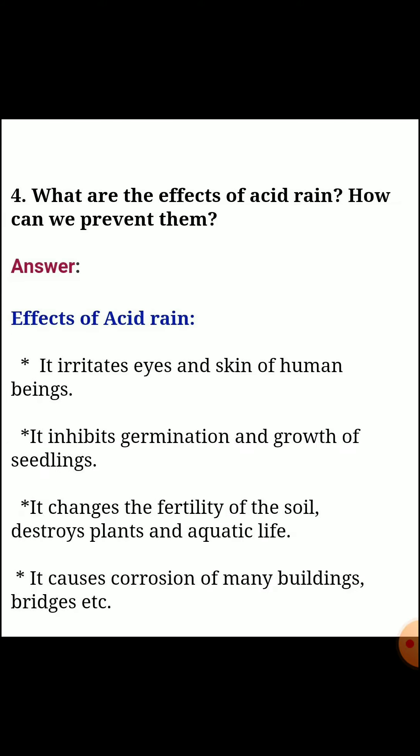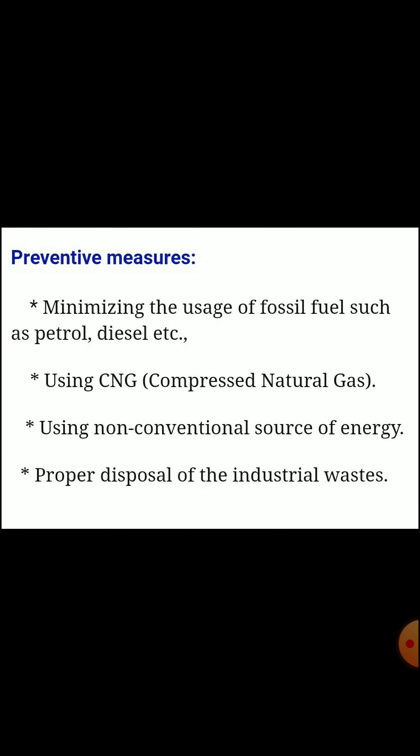Fourth question, what are the effects of acid rain and how can we prevent them? Effects: it irritates the eyes and skin of human beings, inhibits germination and growth of seedlings, changes the fertility of soil, destroys plants and aquatic life, and causes corrosion of buildings and bridges. Preventive measures: minimize usage of fossil fuels such as petrol and diesel, use CNG (compressed natural gas), use non-conventional sources of energy, and ensure proper disposal of industrial waste.